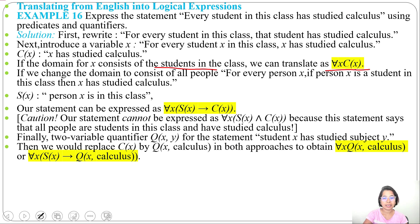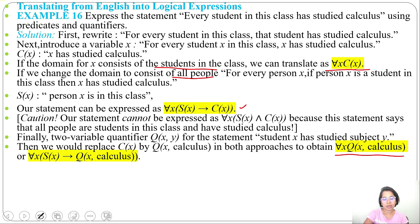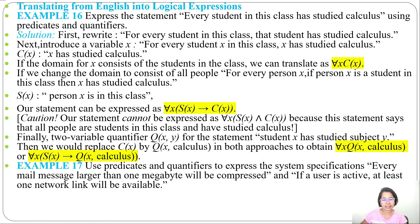To summarize: if domain is the set of students, the expression is for all x, C(x). If domain is all people, it's for all x, S(x) implies C(x). Using two variables, it's for all x, Q(x, calculus), or for all x, S(x) implies Q(x, calculus). Next, example 17: use predicates and quantifiers to express system specifications.